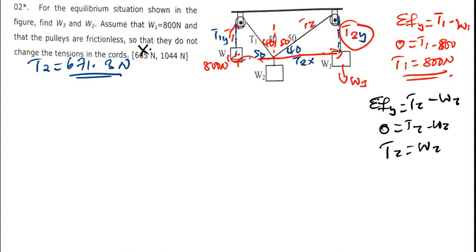So then we are going to say the summation of forces in y-direction, we have T1Y pointing upward plus T2Y pointing upward minus the same W2 which is the weight force. Replace this with 0.